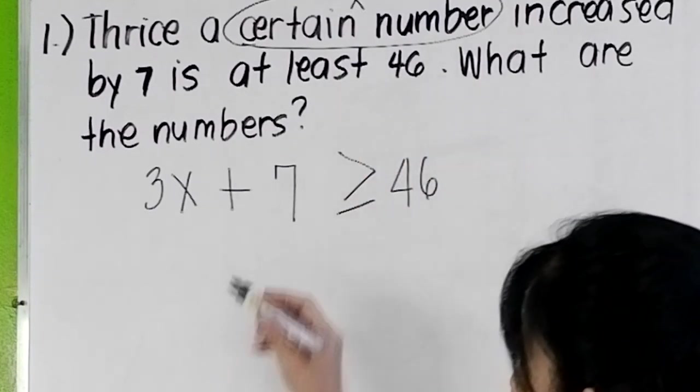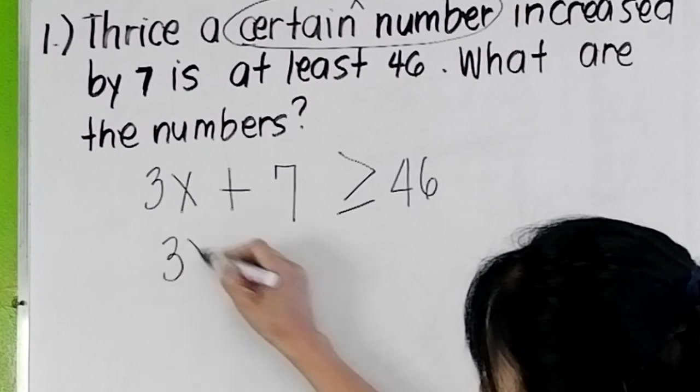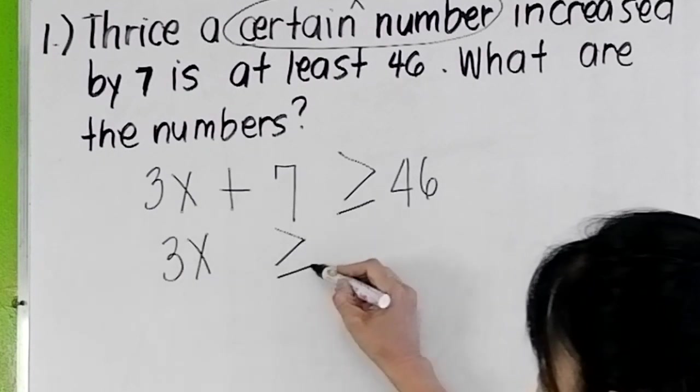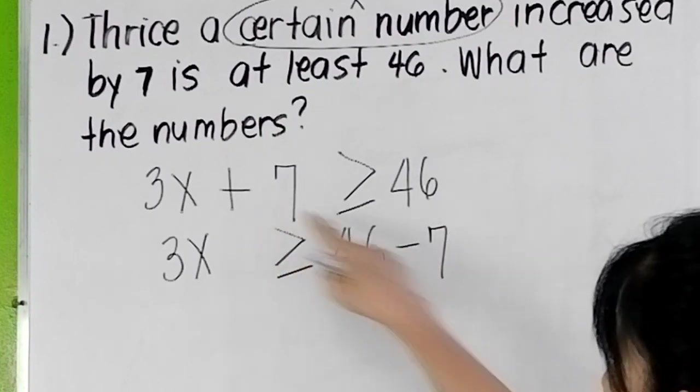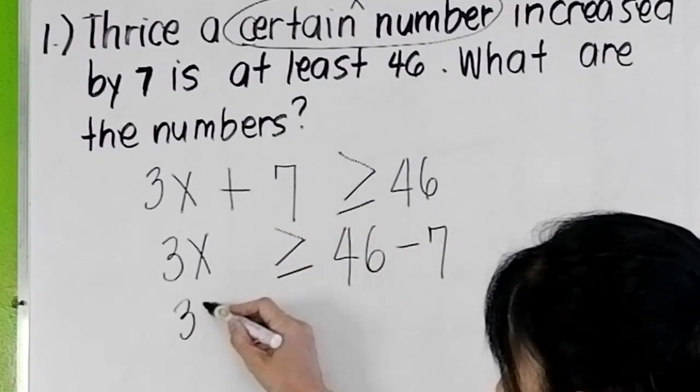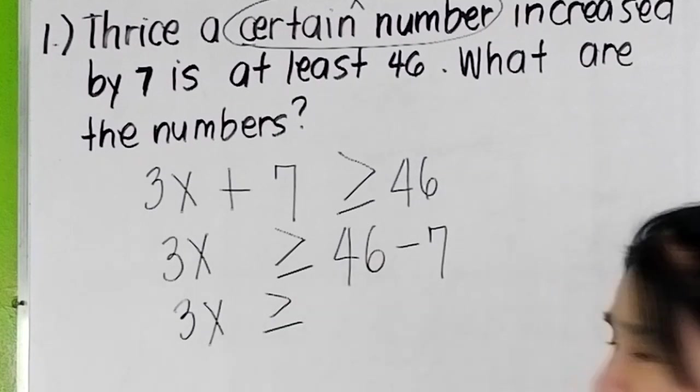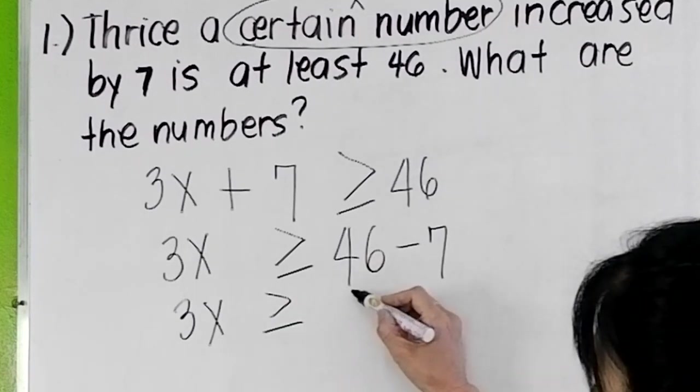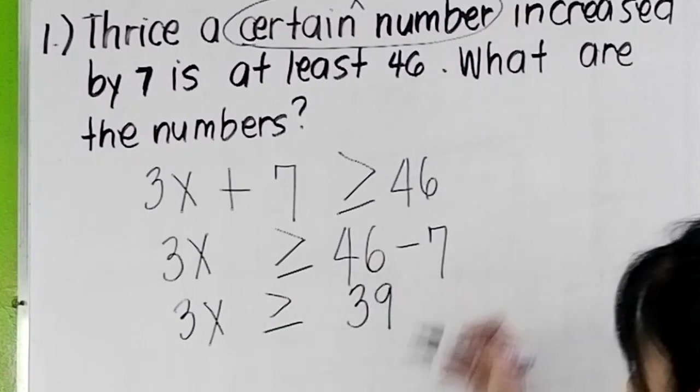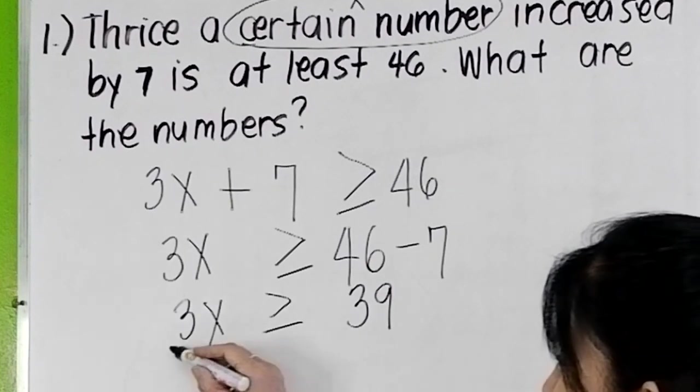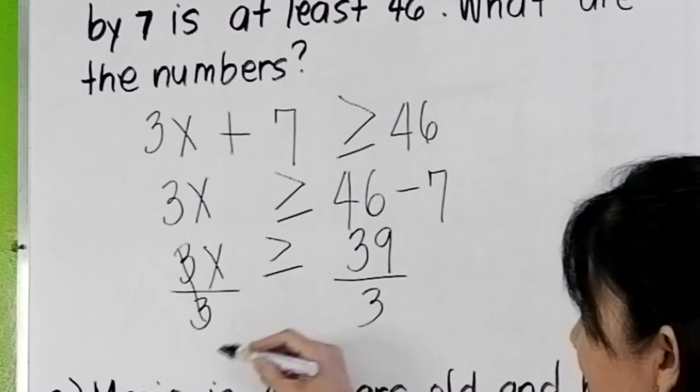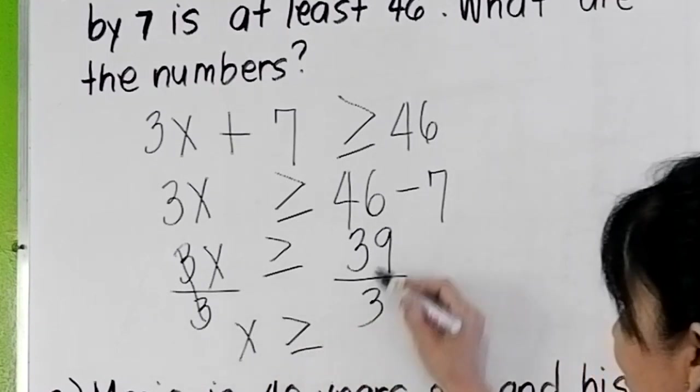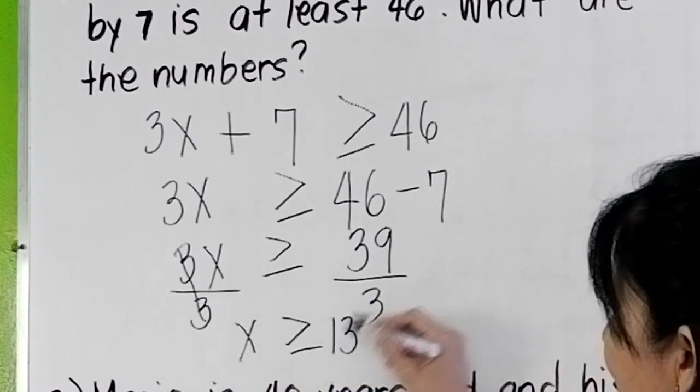What are the numbers? Very simple. Transpose 7 to the other side, so we have 3x is greater than or equal to 46 minus 7. Transpose it there, so 3x is, what is 46 minus 7? It's 39. Then divide both sides by 3, cancel this. X is greater than or equal to 39 divided by 3 is 13.